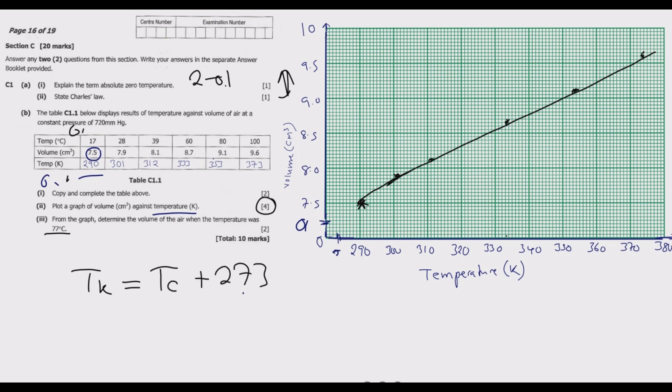To find temperature in Kelvins, we add 77 plus 273, which gives us 350 Kelvins, as in degree Kelvins in this case.